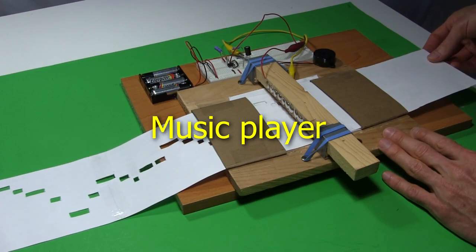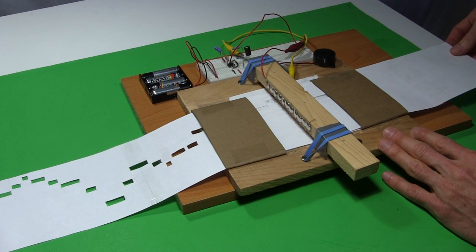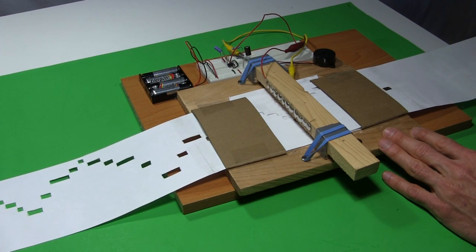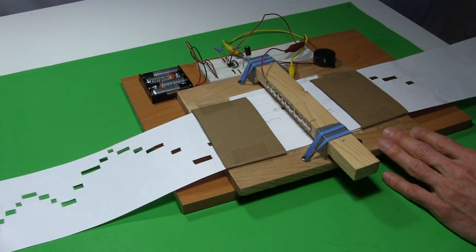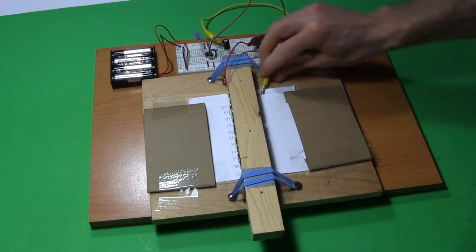Next up is this music player. You simply pull this piece of paper with holes in it through this section here, and the 555 timer circuit plays music. How does it work? I'll take it apart so you can see.